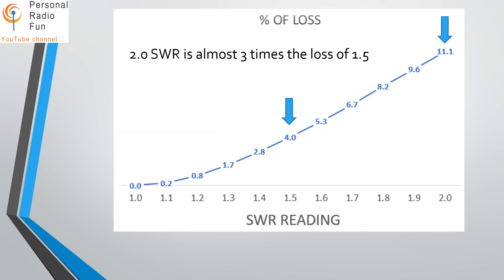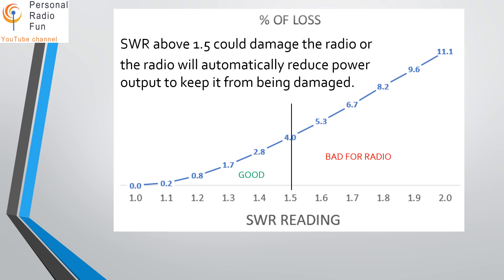Here I've charted those numbers all the way up to 2.0 SWR. At 1.5 SWR we're at 4.4% loss, and at 2.0 SWR we're at 11% loss — nearly three times as much. The jump gets much bigger the higher you go. So anything 1.5 or less is good; anything higher can be bad for the radio.